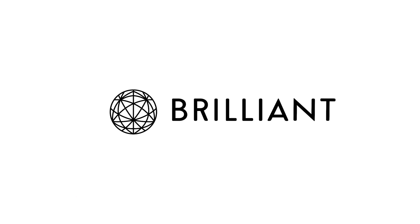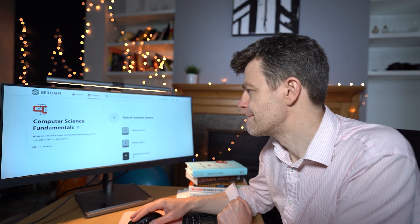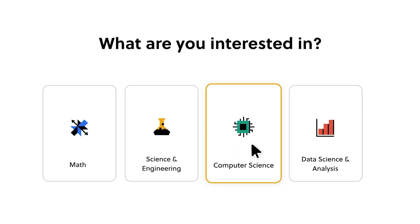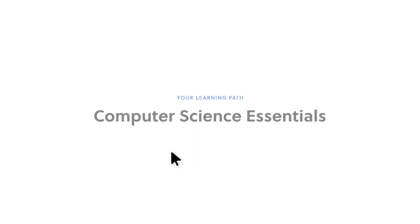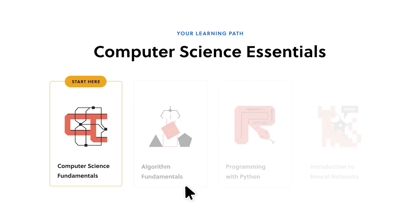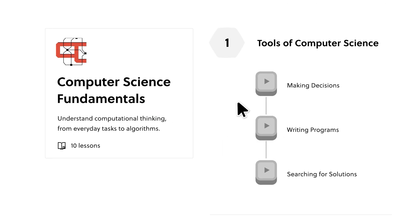Now the code that ChatGPT produces isn't going to be perfect. If you want to learn to code or delve into computer science, then take a look at Brilliant.org, the sponsor of this video. You learn by doing, and Brilliant's platform is built around that concept. Brilliant offers thousands of lessons from foundational to advanced math, computer science, AI and data science, with new content added monthly.